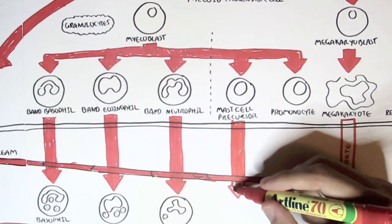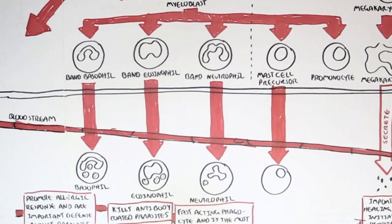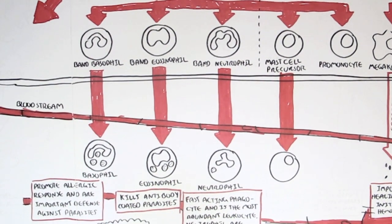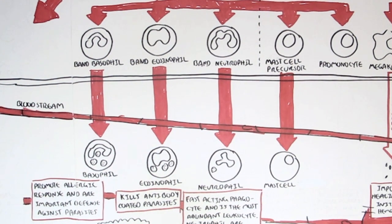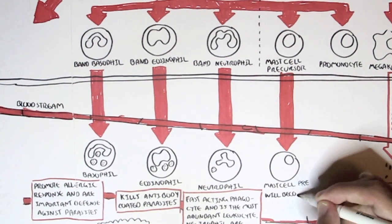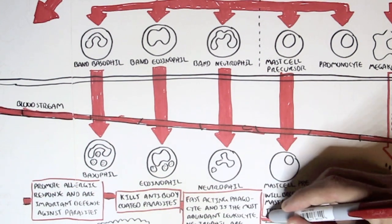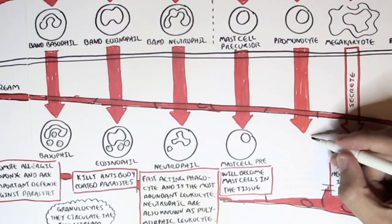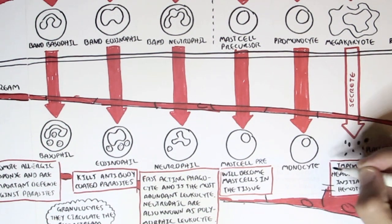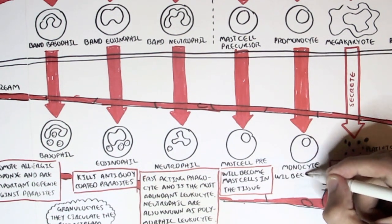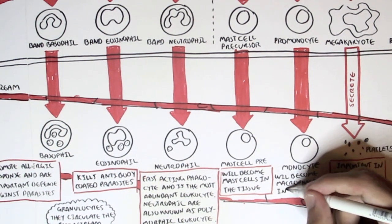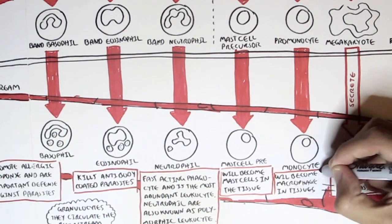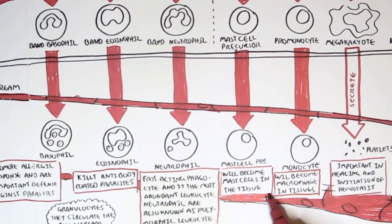The mast cell precursor, when it leaves the bone marrow, remains a mast cell precursor until it enters tissues, where it becomes a mast cell. Interestingly, mast cells also contain granules, but they are not part of the granulocyte group because they don't circulate like basophils, eosinophils, and neutrophils — they stay in the tissue. The promonocyte, when it leaves the bone marrow, becomes a monocyte. A monocyte circulates in the bloodstream, but when it enters tissues, it becomes a macrophage. Macrophages are antigen-presenting cells and also engulf pathogens.